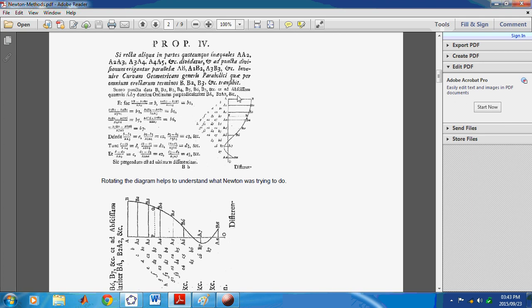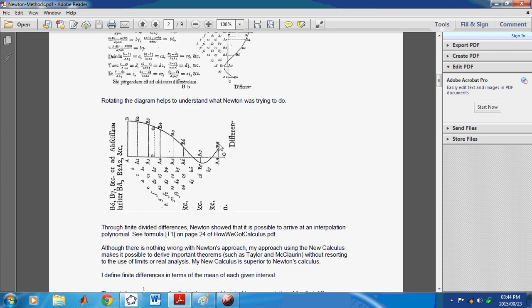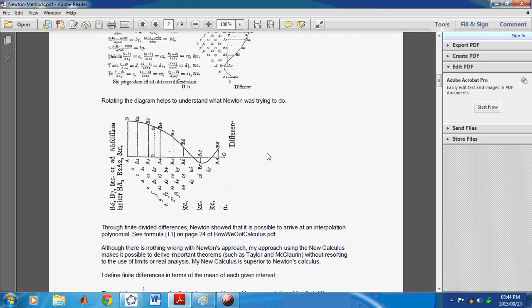So, this diagram over here, where I'm pointing to with my cursor, is in fact the diagram that appears in Newton's document. And it's actually explaining how he uses finite differences to approximate the value of functions. So, what I've done is I've tilted this diagram around, as you see over here, so that it's easy to understand.